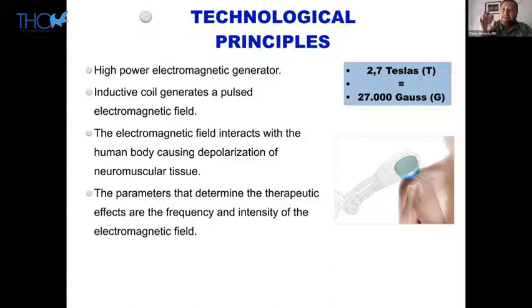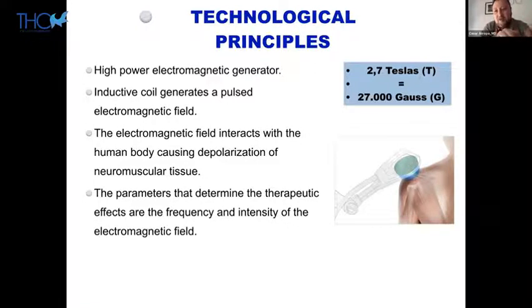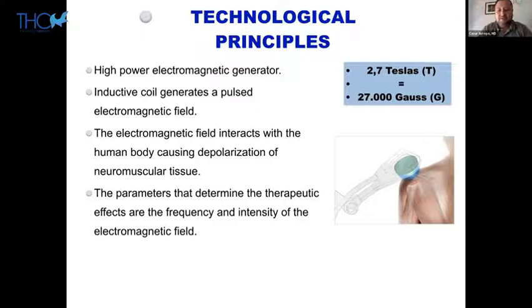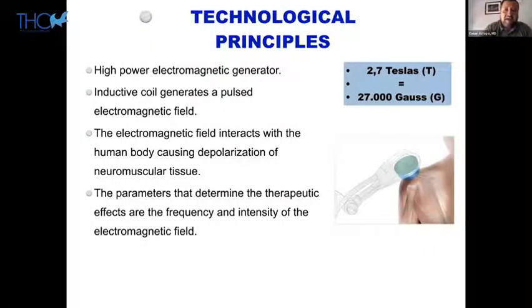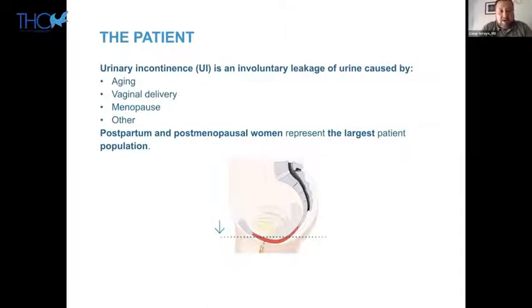This high-power electromagnetic generator is really important to achieve the correct depth in this therapy. The electromagnetic field interacts with the human body causing polarization of the neuromuscular tissue. When using it for contraction, you can control not only the contraction but also the relaxation of the muscles. This explains how we can address not only hypertrophy and hyperplasia of muscles but also control relaxation — important in conditions like vaginismus. The parameters are determined by frequency and intensity, combined in different ways to achieve different treatment outcomes.